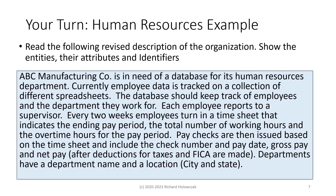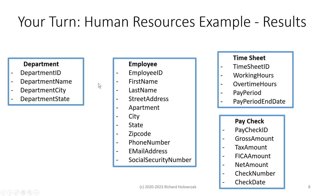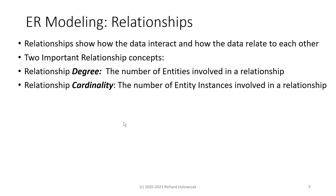You may also recall this example. We read through a human resources opportunity or problem and identified the entities, attributes, and identifiers — all covered during Part 1. We're now going to continue this example by focusing on the relationships between these different entities. Relationships show how the data interact and how the data relate to one another. There are two important concepts to understand: relationship degree and relationship cardinality.